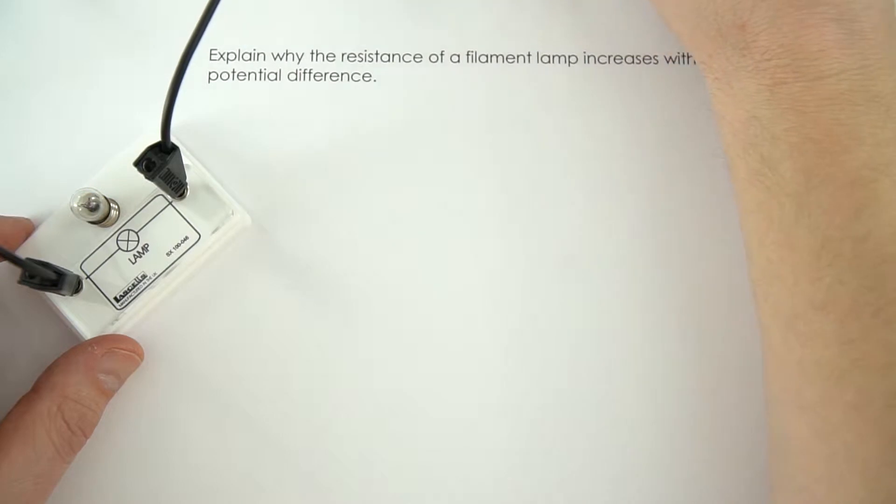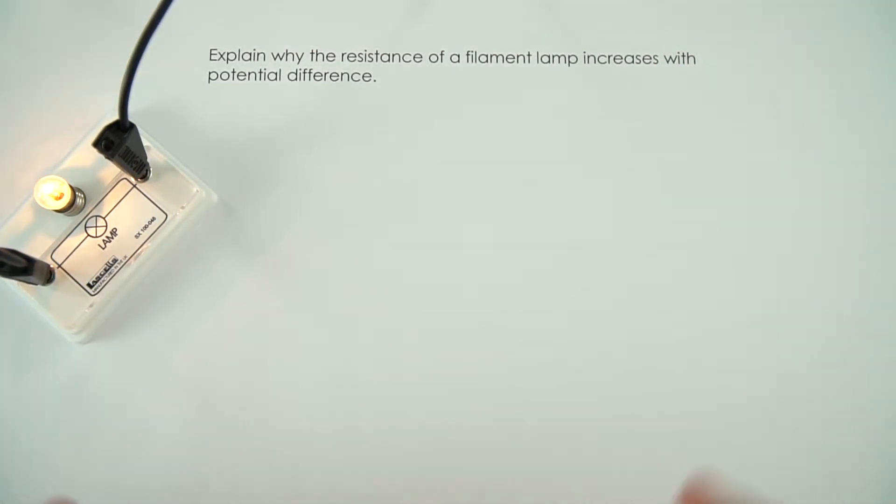So why is it when you have a lamp and then you increase the potential difference across it, why does the resistance of that lamp increase? I'm going to try and explain this and put down some of the key points that might help.